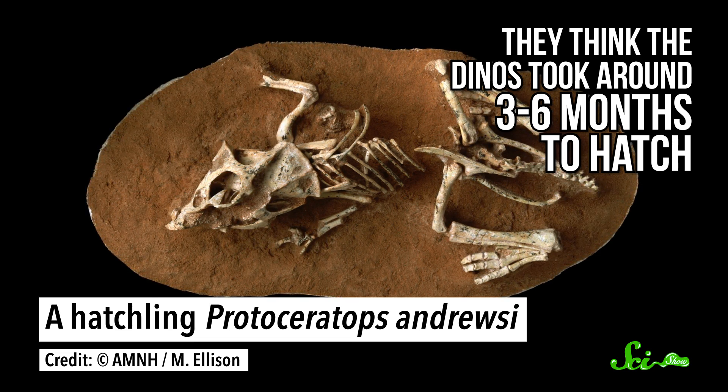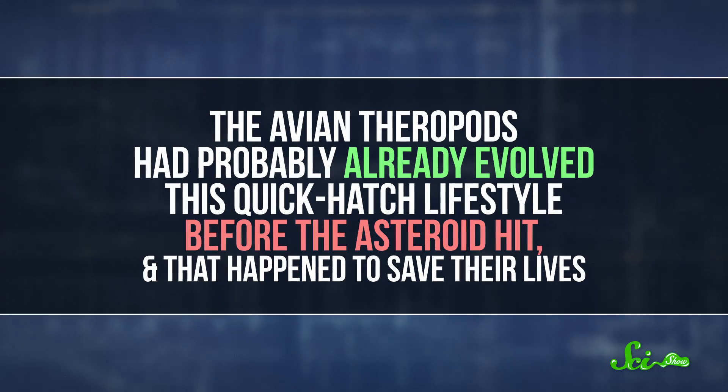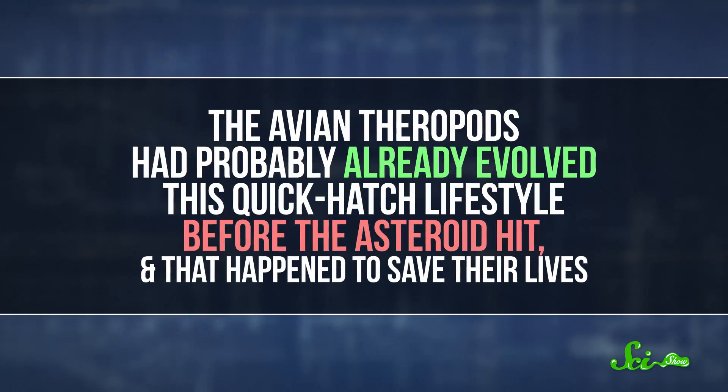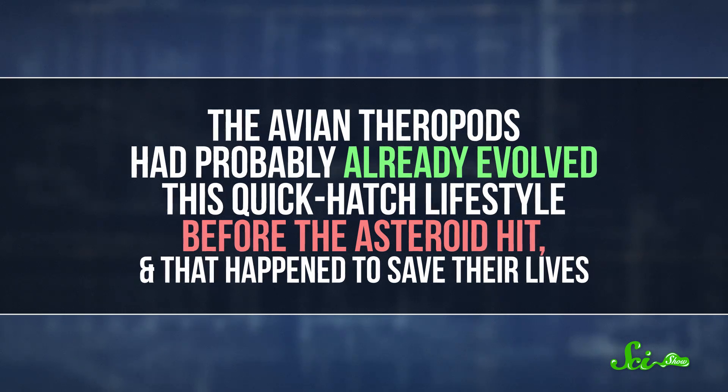Turns out they think the dinos took around three to six months to hatch, much longer than expected. This slow development presumably worked fine during the Cretaceous, but not when a whopping asteroid and intense climate change hit. Being stuck inside an egg for so long might have made late-blooming dinosaurs less adaptable to this harsh and changing world. The avian theropods had probably already evolved this quick hatch lifestyle before the asteroid hit. And that happened to save their lives.